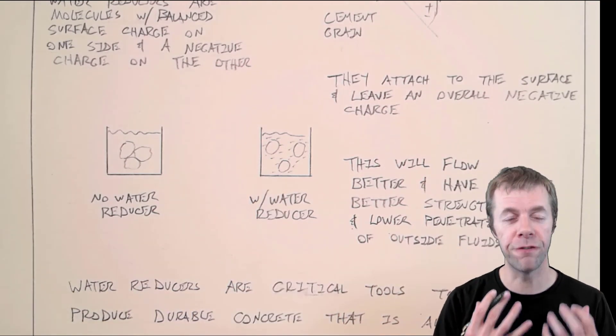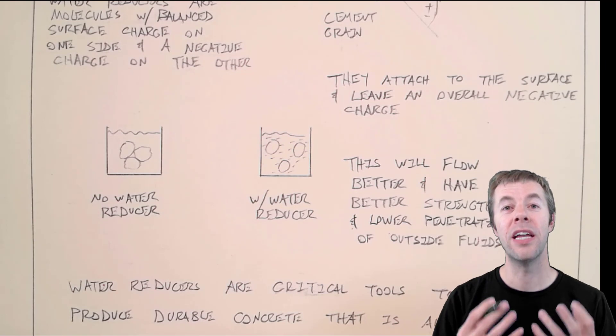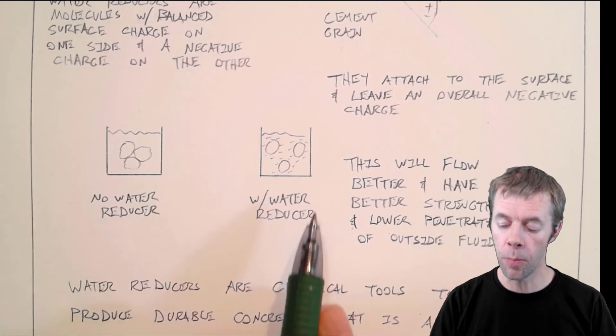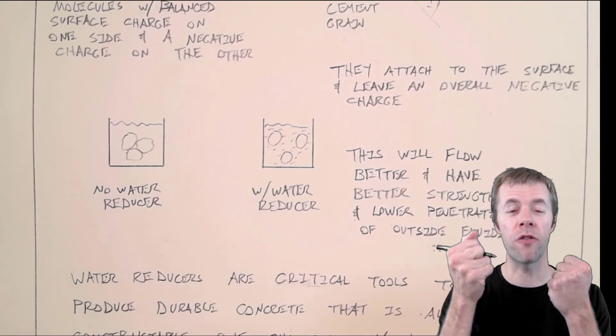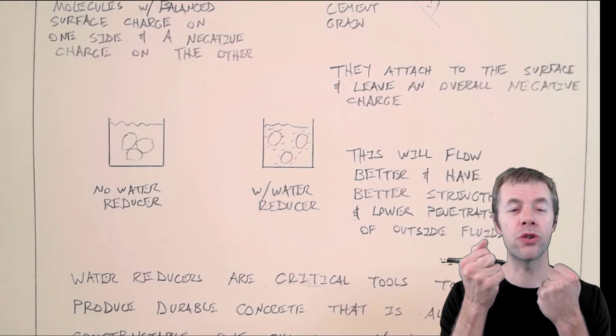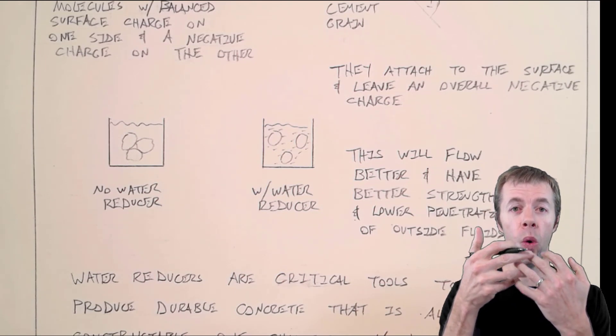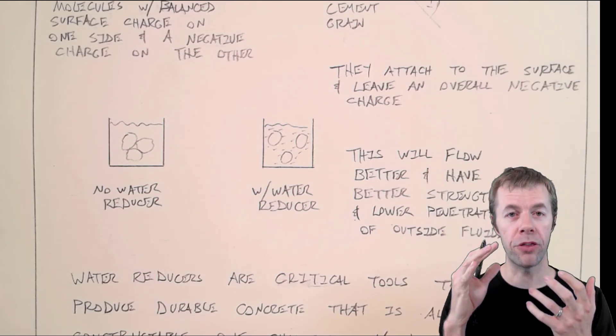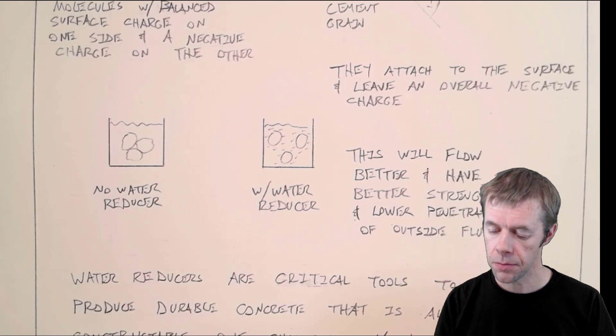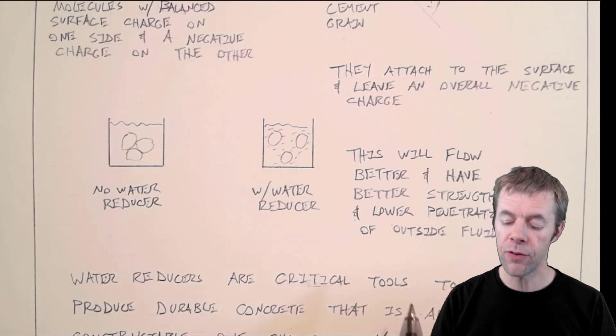They would line themselves up on the surface of the cement grain, putting an overall negative charge on the surface. So a mix with water reducer sends those cement grains apart, making it easier to mix, easier to flow. So this system's going to flow better. It's actually going to have better strengths because these cement grains are further apart, well distributed, so they'll grow more evenly, more uniformly throughout.